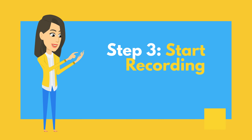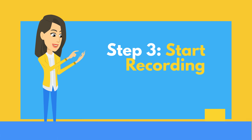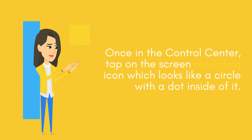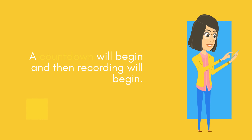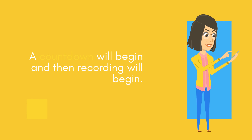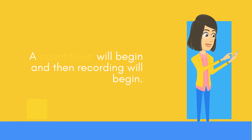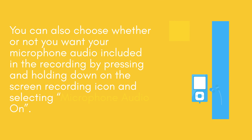Step 3: Start Recording. Once in the Control Center, tap on the Screen Recording icon, which looks like a circle with a dot inside of it. A countdown will begin and then recording will start. You can also choose whether or not you want your microphone audio included by pressing and holding down on the Screen Recording icon and selecting Microphone Audio On.